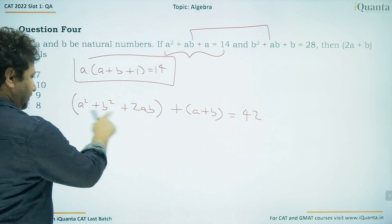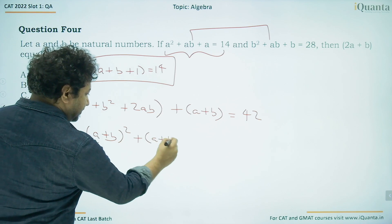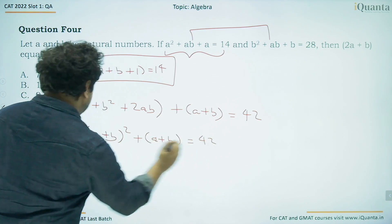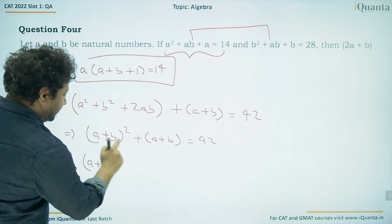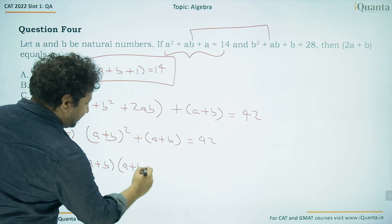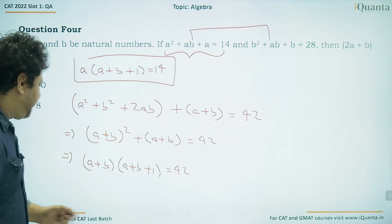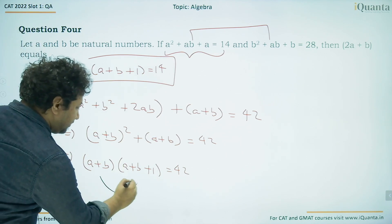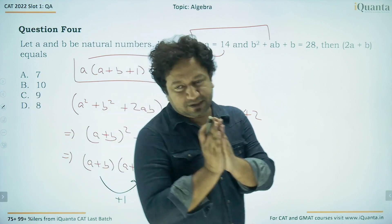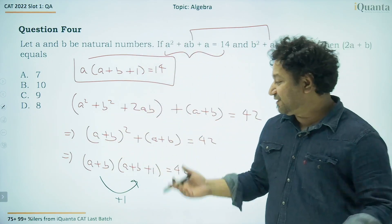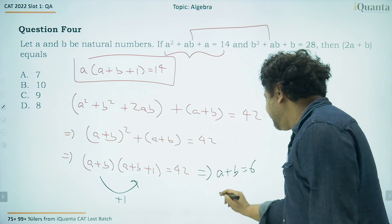If we add both equations, we get a² + b² + 2ab + a + b = 42, which is (a + b)² + (a + b) = 42. Taking (a + b) common: (a + b)(a + b + 1) = 42. The values (a + b) and (a + b + 1) are one step apart, so we need to factor 42 into two consecutive integers: 6 × 7 = 42. Therefore a + b = 6.